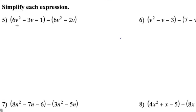Number 5: we have 6v squared minus 3v minus 1, minus the quantity 6v squared minus 2v. Let's add the opposite of this entire binomial. If I change the subtraction sign to addition, I need to change the sign of both terms inside the parentheses — so this becomes negative 6v squared and positive 2v. Now I have an addition problem, so I just need to line up like terms and find the sum.